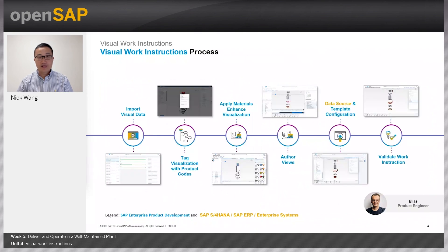This is the end-to-end workflow for visual work instructions. We have a powerful authoring tool within EPD visualization which allows users to enhance the 3D model to make it more realistic. In addition, users are able to configure the viewer template so that relevant business data from backend services can be displayed when a particular object is selected in the viewport. You will learn the detailed step-by-step process of creating visual work instructions over the coming slides.